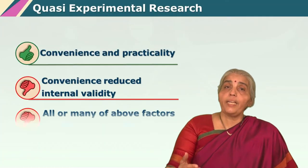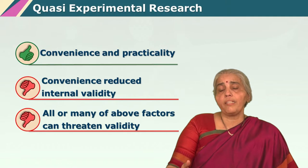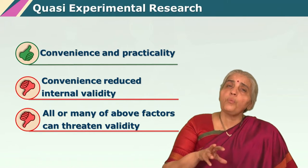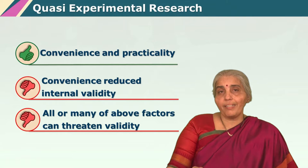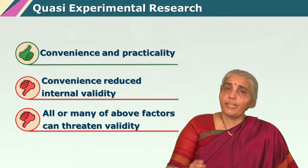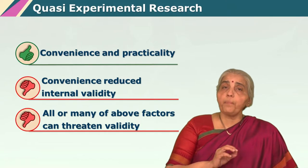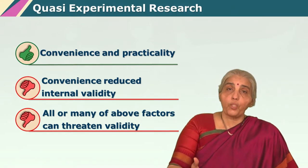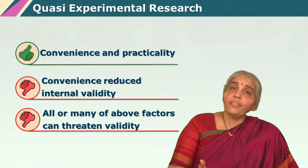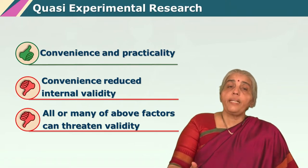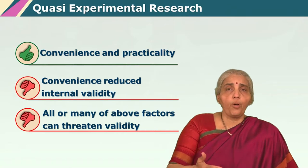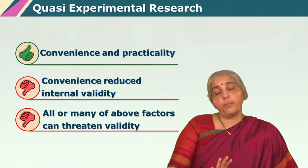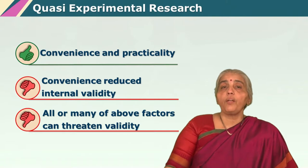Let us move to quasi-experimental designs. They are called so because they are almost experimental designs but not perfect experimental designs. In quasi-experimental designs, one cannot always get a perfectly randomized subject pool. Sometimes it is not possible to select subjects using a random number table, so you take subjects through other sampling methods like snowball sampling, convenience sampling, or incidental sampling — all of which are permissible in a quasi-experimental design.